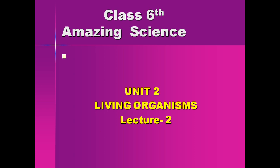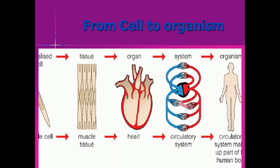Unit number two: Living Organism, Lecture Two — From Cell to Tissue. In the previous lecture we studied about the cell: the cell is the structural and functional unit of the living organism. Tissue is when the same kind of cells performing the same function are grouped together; that is called tissue.